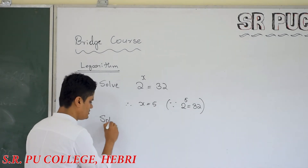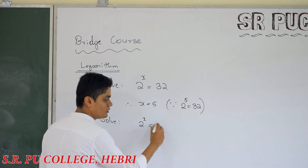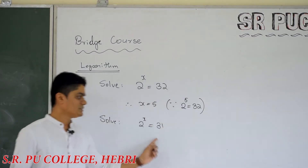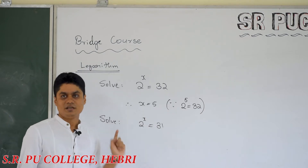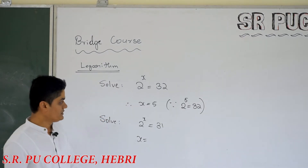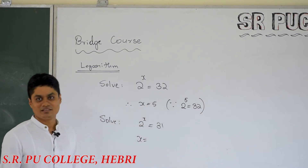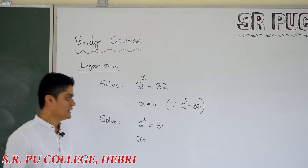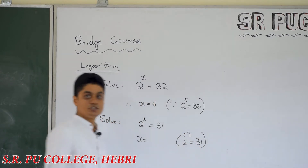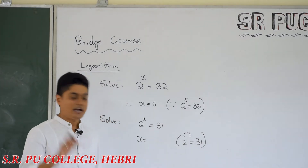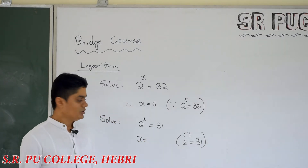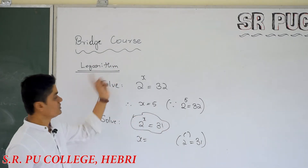Now I will bring one very small change to this equation: 2 power x is equal to 31. Only one number is reduced, the expression is almost the same — the percentage difference is maybe 0.01%. But can you solve this? Can you give me the solution of x? You may say it is 4.999 something, but can you give the exact value? No, because you do not have an integer value as a power of 2 which gives 31. So to solve this type of equation, we need the concept called logarithm.